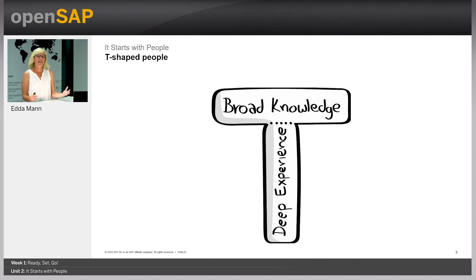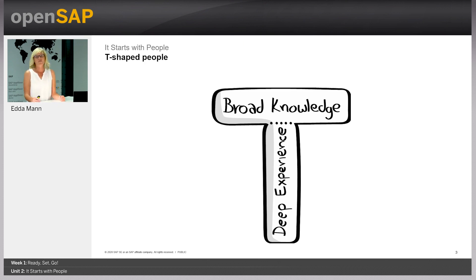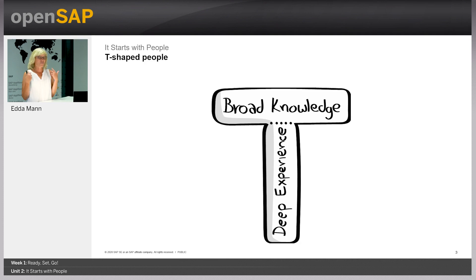What kind of personalities do you need in such a team? We usually talk about T-shaped people. T-shaped people — it's a metaphor to describe the abilities of persons in the workforce. The T describes everybody: the vertical bar of the letter T is the depth of the related skills and experience that you personally have in a certain field.